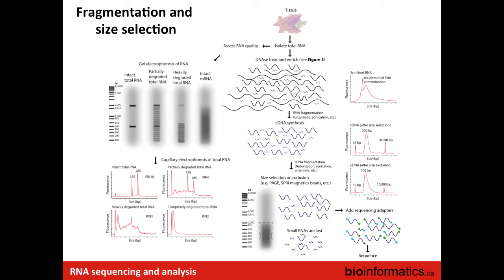Quick question: if you're doing total RNA, are you still capturing some of the poly-A RNA? Yes, you're not excluding them — with poly-A selection, you're only getting the poly-A. Total RNA keeps everything.